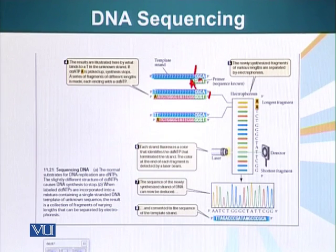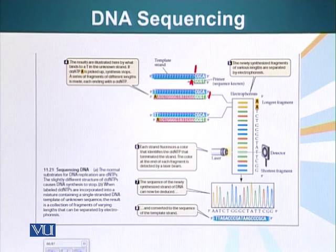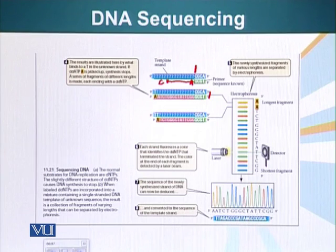Say for example an A was incorporated as a special nucleotide — it stopped the primer from extending any further. In the next cycle, perhaps the chain will grow further until a special nucleotide such as G is added. So we generate PCR products of all lengths, from the starting point of the primer to the last nucleotide, and all these bands will terminate with a special fluorescent nucleotide.